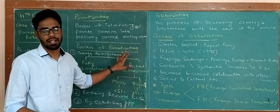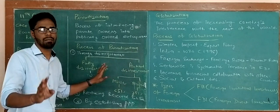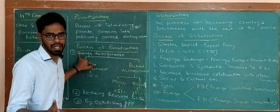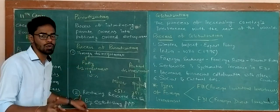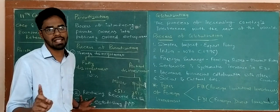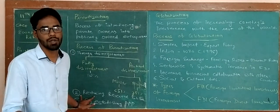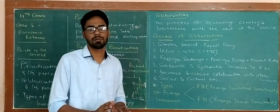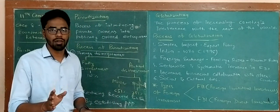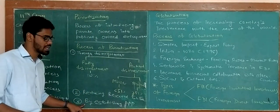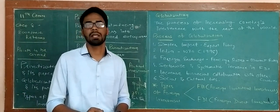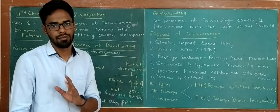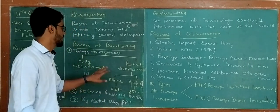How are we going to do that? What is the process of privatization? There are three major points. Number one, that is through disinvestment. Second, by reducing the numbers of reserved public sectors. And third, that is by establishing the PPP model — Public-Private Partnership. So let's start with the first point, that is disinvestment.